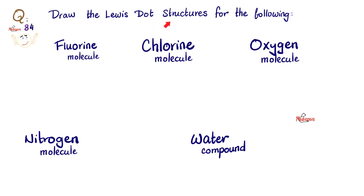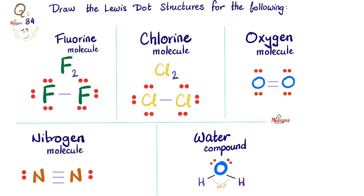Next, draw the Lewis dot structures for the following: fluorine molecule, chlorine molecule, oxygen molecule, nitrogen molecule, and water compound. Pause and do it.